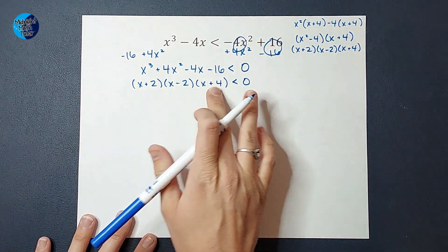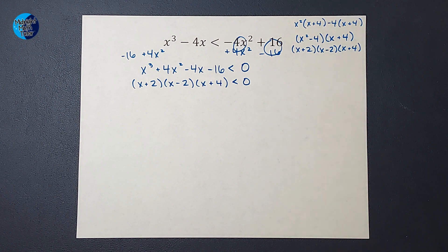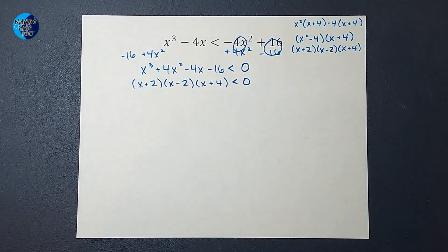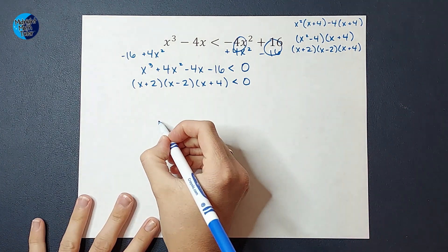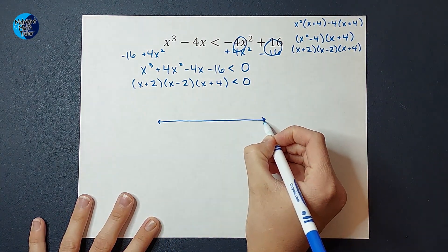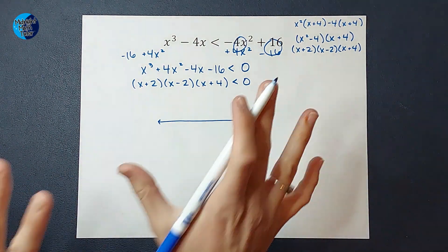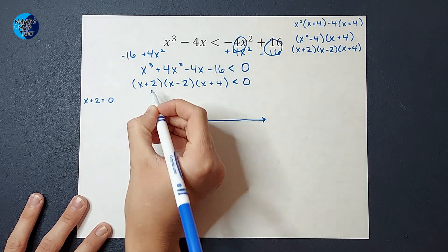So the fully factored form is X plus 2 times X minus 2 times X plus 4, less than 0. If this were an equal sign, I would set each factor equal to 0. But it's an inequality, so for just a moment, we're going to pretend it's an equal sign just to find where the zeros are. I'll show you a little graph at the end that explains this.